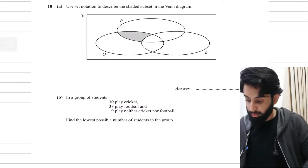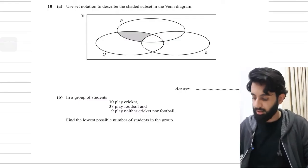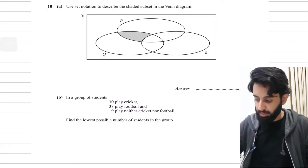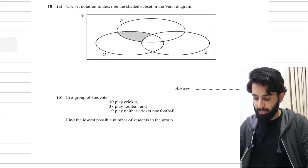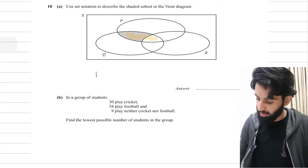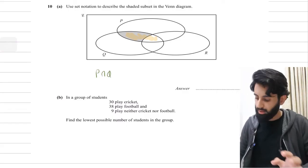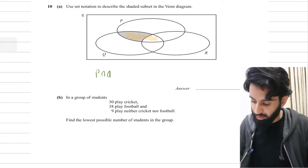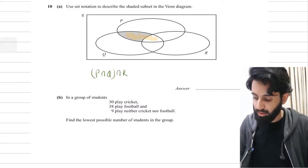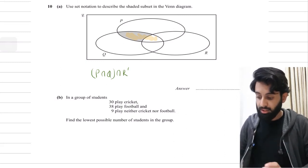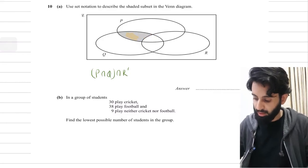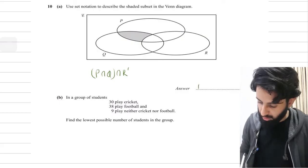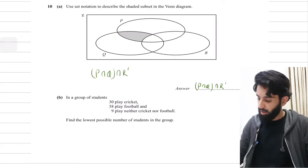The next question asks us to use set notation to describe the shaded subset in a three-set Venn diagram. It's P intersection Q with the exception of R, so we write P ∩ Q ∩ R complement. This excludes the region of R, and we get exactly the shaded region shown.